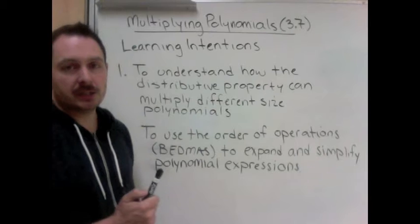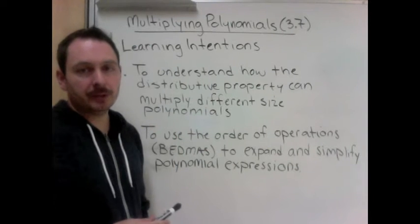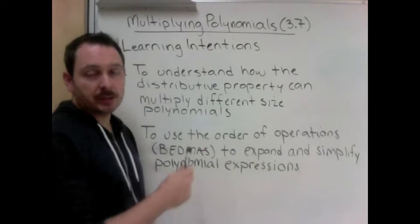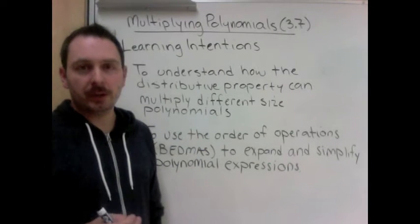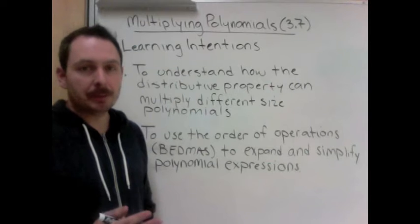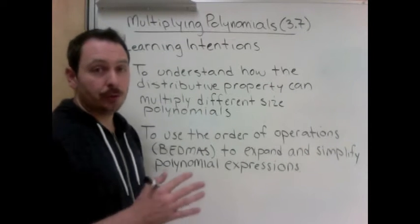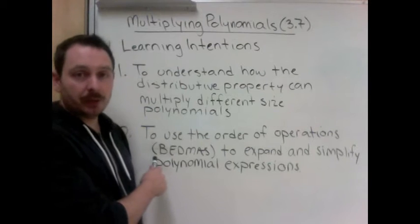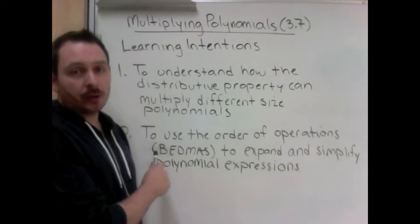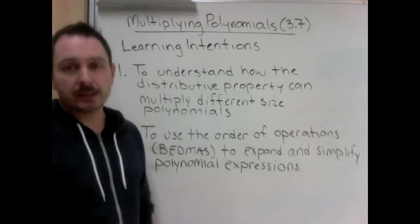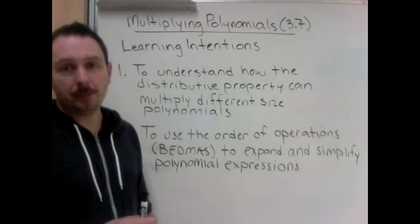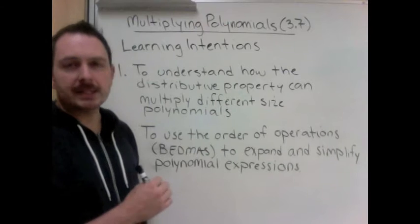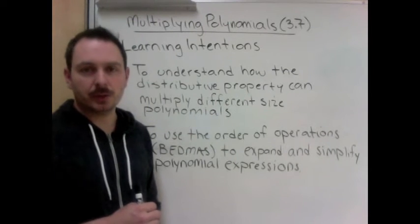The learning intentions for today: first is to understand how the distributive property can multiply different size polynomials. So before with FOIL it was a binomial times a binomial. Now we might be multiplying different size polynomials, so a binomial by a trinomial. And the second thing we'll be working with is to use the order of operations, which you know as BEDMAS, to expand and simplify polynomial expressions. So sometimes instead of just multiplying, there will be a plus sign and some things in between these polynomials that we need to work with as well.